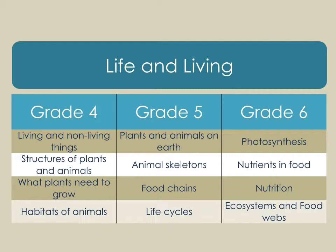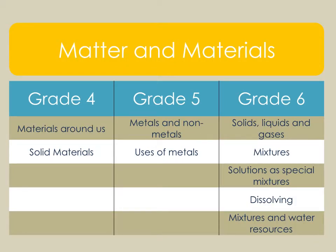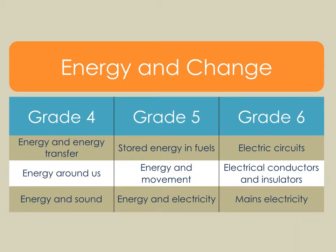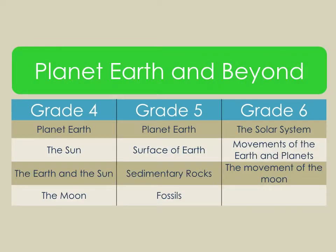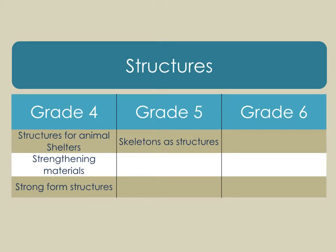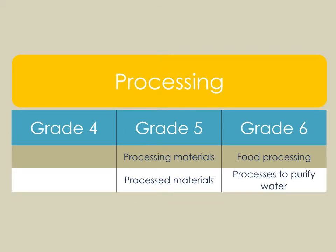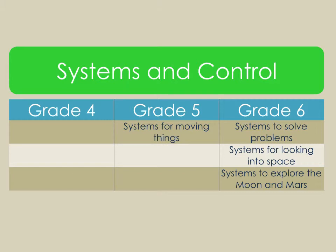Looking at the content strands: life and living covers different aspects across grades four, five, and six. Matter and materials also varies by grade, with grade six having significantly more focus. Earth and change has different aspects each year. Planet Earth and beyond covers the sun, moon, Earth, rocks, fossils, and so on. Structures is mainly focused in grades four and five. Processing focuses in grade five and a little more in grade six. Systems and control is not taught in grade four; in grade five learners are introduced to systems for moving things, and in grade six they explore problem-solving, looking into space, and systems to explore the moon and Mars.